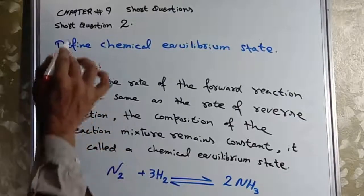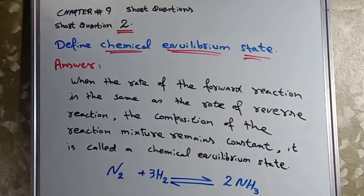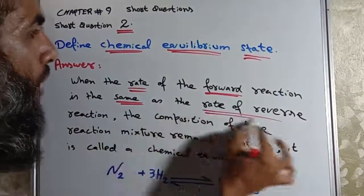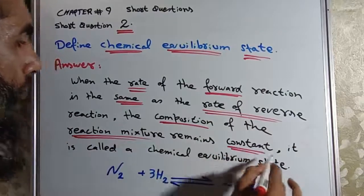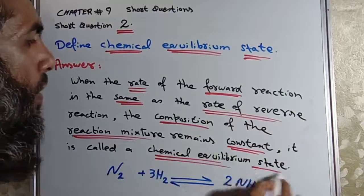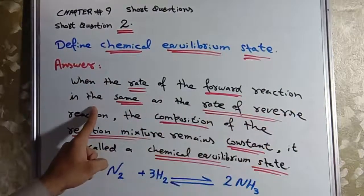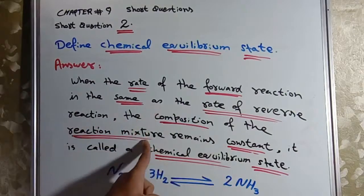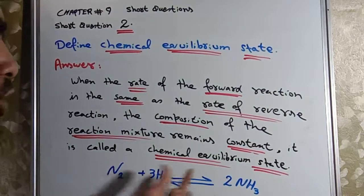Short question 2: Define chemical equilibrium state. When the rate of forward reaction is the same as the rate of reverse reaction, the composition of reaction mixture remains constant. It is called chemical equilibrium state. Composition constant, matlab reaction aur product concentration change nahi hota.